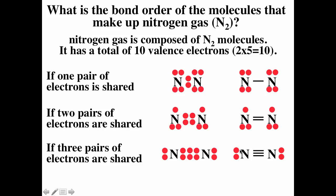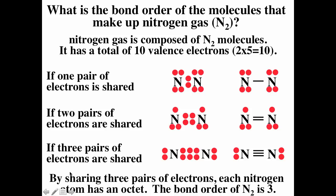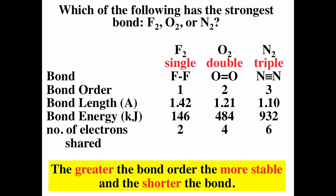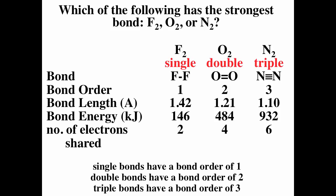Trying a triple bond for N2: we still use ten valence electrons. Now each nitrogen sees eight electrons — noble gas configuration. By sharing six electrons in a triple bond, both nitrogens get noble gas configuration. The bond order for a triple bond is three. Comparing the three diatomics: N2 has the shortest bond length and highest bond energy because it has a triple bond. The greater the bond order, the more stable and shorter the bond. Single bonds have bond order one, double bonds two, and triple bonds three.